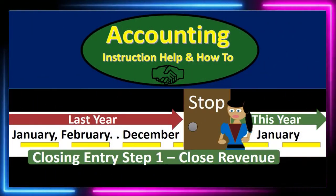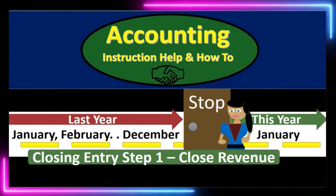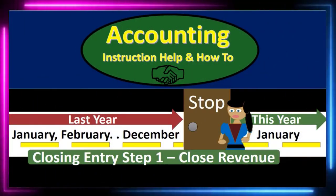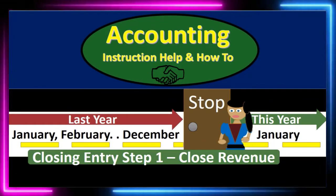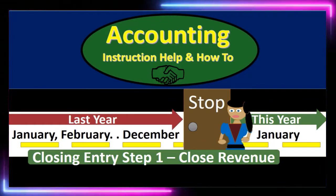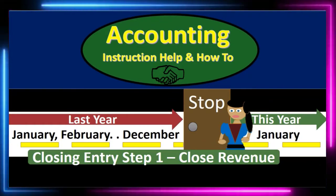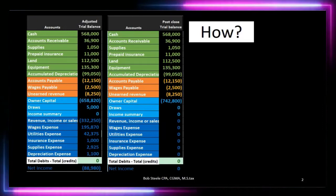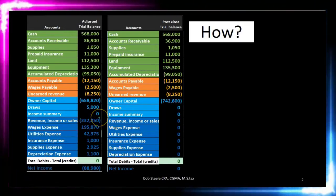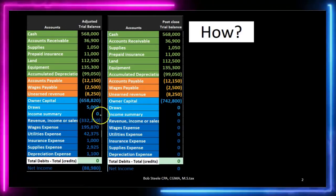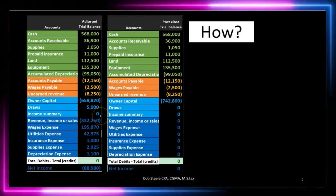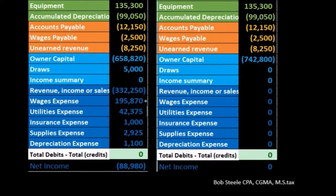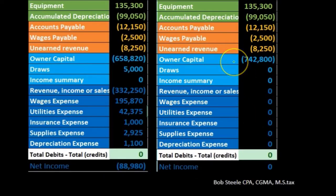In this lecture we're going to talk about the closing process, step one of the four-step process. Last time we talked about the objectives of the closing process, which in essence was to close out the temporary accounts — all the accounts from the draws and the revenue and expenses — down to zero, putting that balance into the capital account.